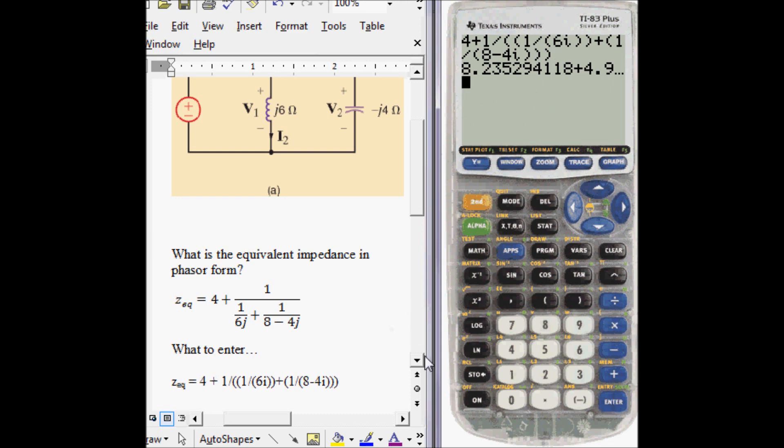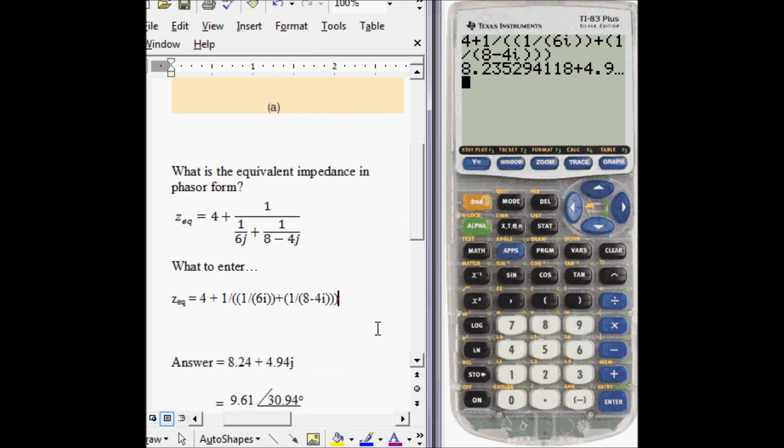Add them. And you get 8.24 plus 4.94 I. And you see the I and J are exchanged here.